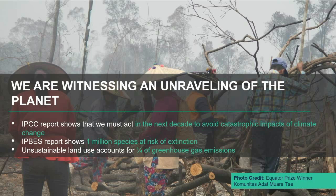Let's paint a picture starting with the bad news — the news that shows us the urgency of taking action to safeguard nature and to address the climate crisis. No matter where we look, we are witnessing an unravelling of the planet. The most recent landmark IPCC report shows that we must act within this decade to mitigate the catastrophic impacts of climate change. The equivalent 2019 IPBES report on biodiversity reported an unprecedented decline of nature, with over one million species at risk of extinction. These twin threats are increasingly recognized as deeply interconnected — unsustainable land use now accounts for over one quarter of global greenhouse gas emissions.